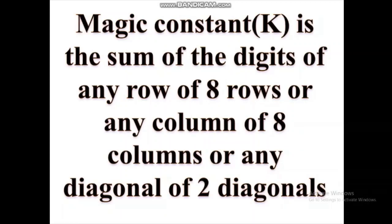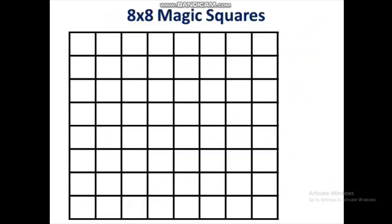What is magic constant? Magic constant is the sum of the digits of any row of 8 rows, any column of 8 available columns, or any diagonal of 2 available diagonals.